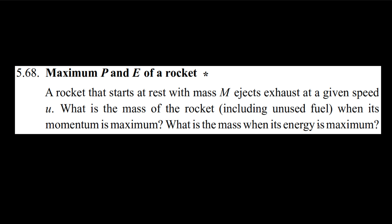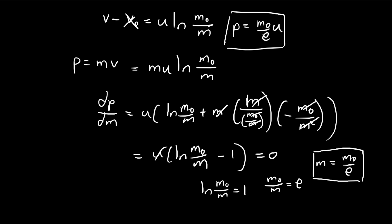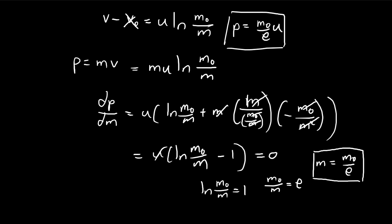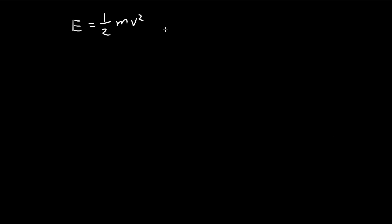For the second part of this problem, we need to find the energy and the corresponding mass by which the energy is maximized. We can do the exact same thing — last time we did it for momentum, this time we're doing it for energy. We substitute this expression inside.